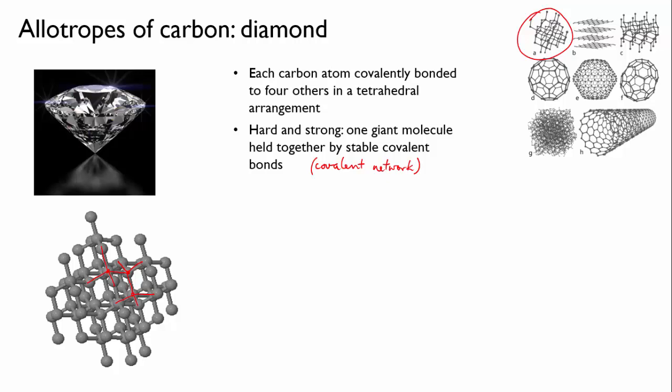Like most covalent compounds, diamond doesn't conduct electricity because the electron pairs are confined within the covalent bonds and they can't move through the compound. Recall the difference with conductive metals, which have delocalized valence electrons that can move through the lattice of positive metal ions and thus conduct electricity.